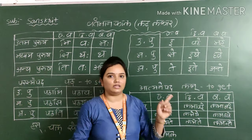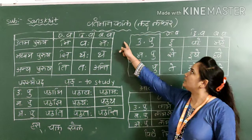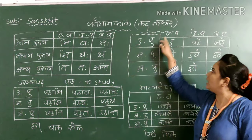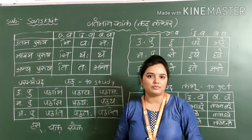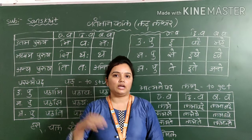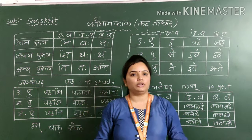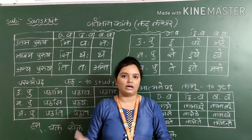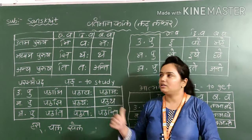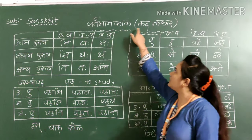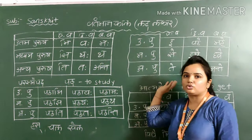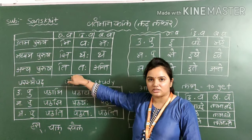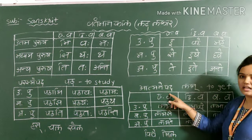So here is the entire Vartaman Kaal, Lat Lakar table. In Sanskrit language, tenses are called Lakar. Here there are ten types of Lakar, but in our study, in grade 8, 9, and 10, we have to take only five tenses — that is Lat Lakar, Lut Lakar, Lrit Lakar, Vidhi Likhit Lakar, and so on. But here first we take Vartaman Kaal, Lat Lakar, and it is divided into two parts: Parasmapad and Atmanepad. First we see the table of Parasmapad, second we see the Atmanepad table.